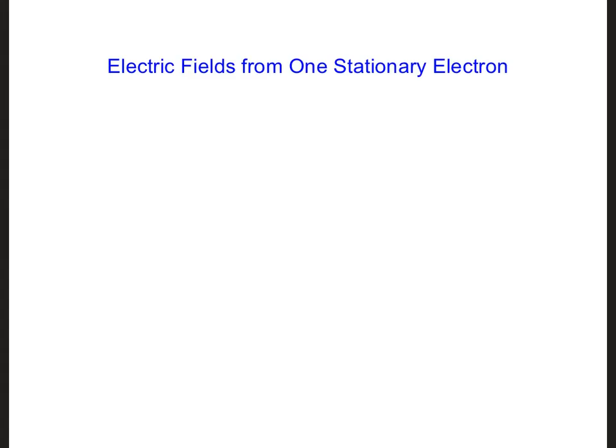Electric current is the mass migration of charges, electrons, in a particular direction. Hence, J, current density, is a vector.